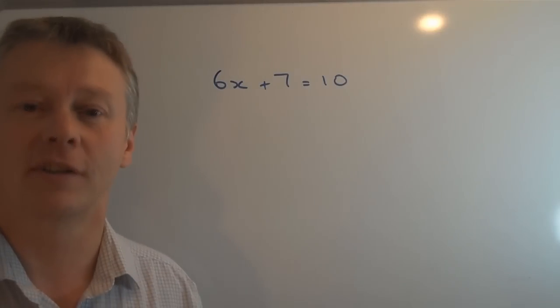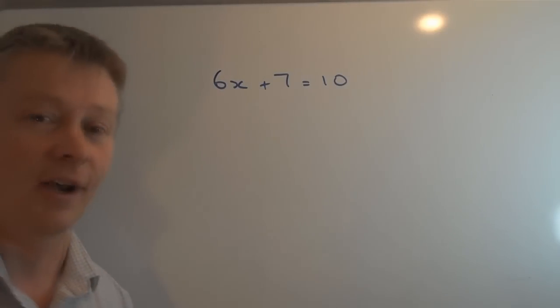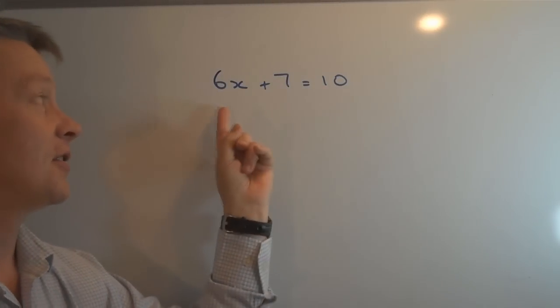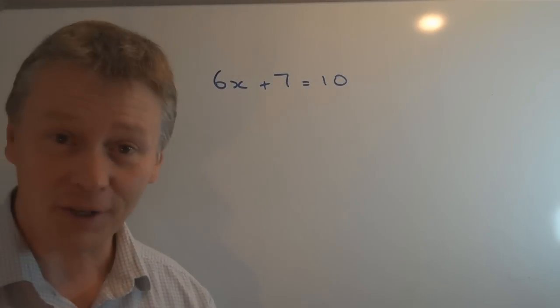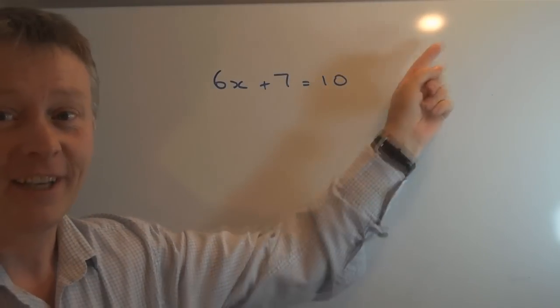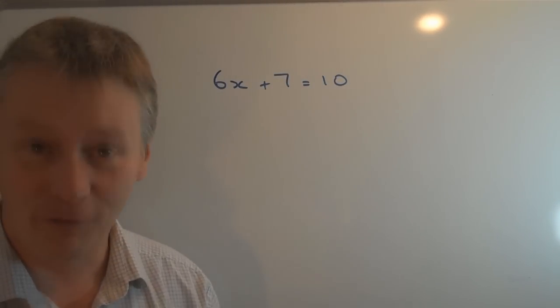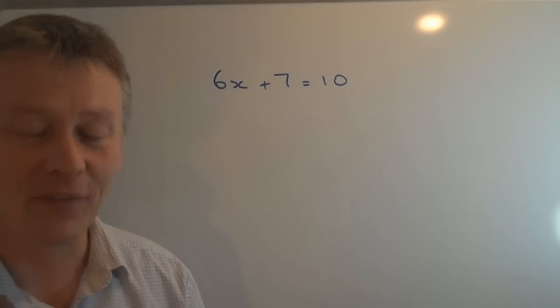The first thing is, rather like fractions, whatever you do to one side of the equal sign you have to do to the other side. With a fraction, whatever you do to the top you have to do to the bottom.